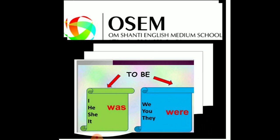Then how to use was and were? किस तरह से was and were का use करना है? तो देखो, was means I, he, she, it — singular noun. Was का use हमें singular noun के साथ करना है। Singular noun में I, he, she and it आता है।